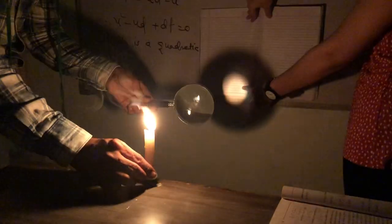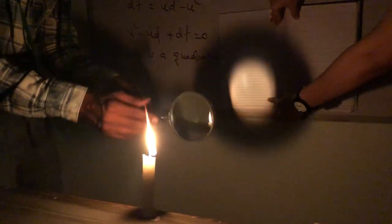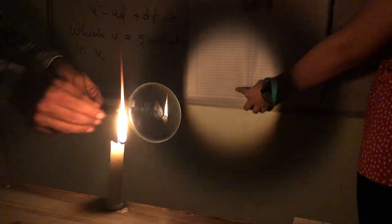But if the distance is less than 4F, for any position we can't get an image. If the distance is greater than 4F, and this time, very tiny flame.